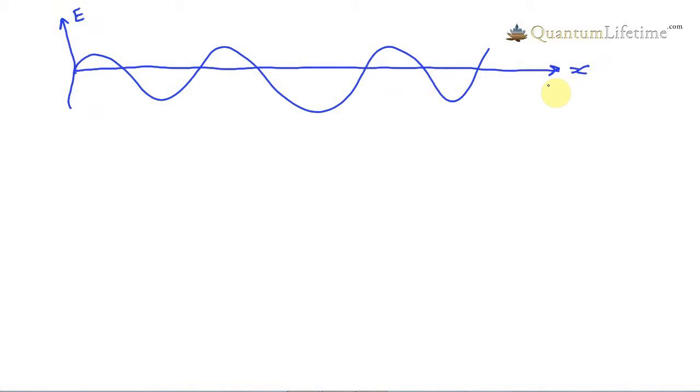it turns out that if we look at the effect of an electromagnetic wave on a charged particle like an electron, as long as that charged particle is not moving close to the speed of light, as long as it's moving relatively slowly, only the electric wave will have a significant effect on it and we can neglect the magnetic wave.